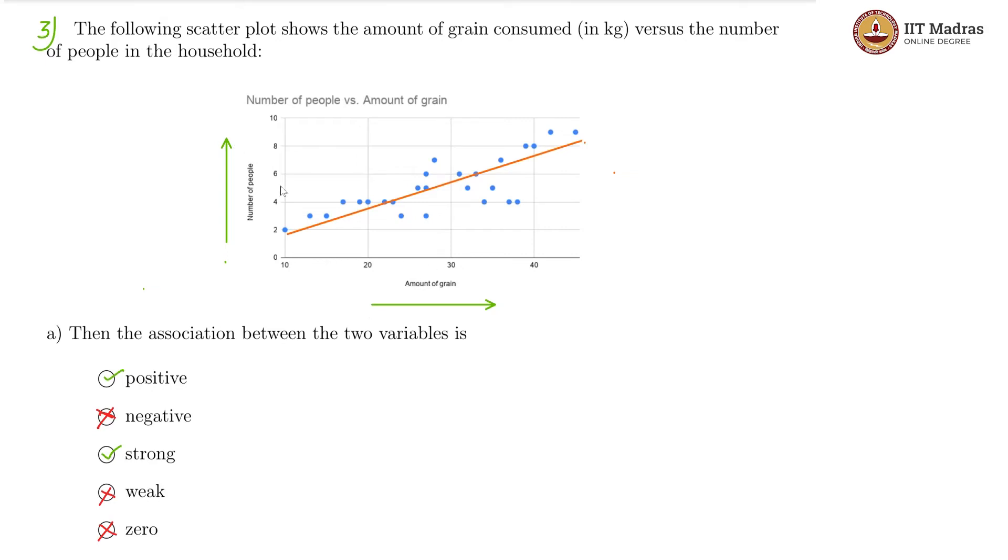It should actually be the other way around. As number of people are increasing, the amount of grain consumed will also increase. So this is a fairly strong linear relationship that we can observe here.